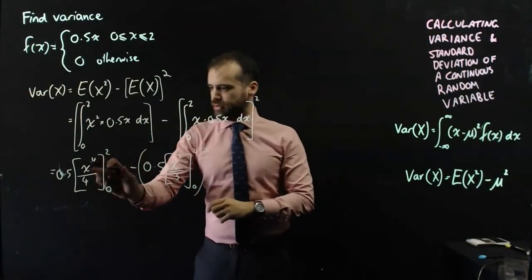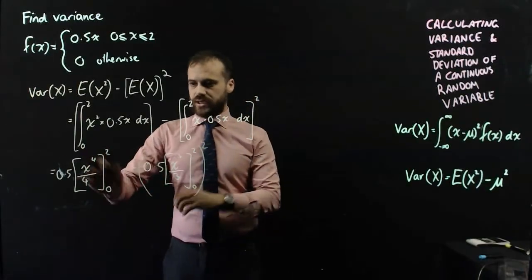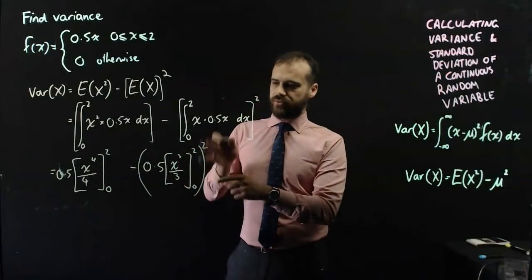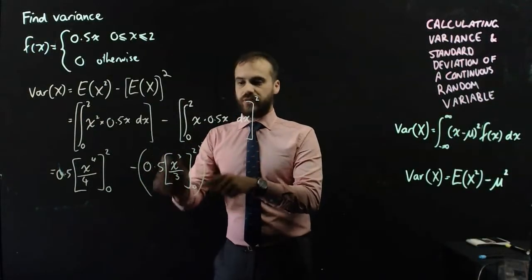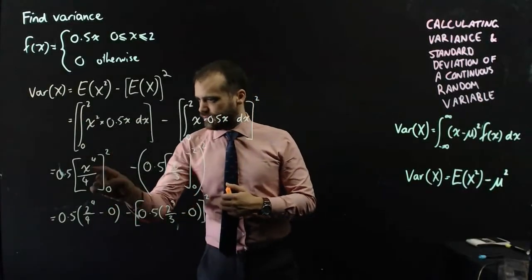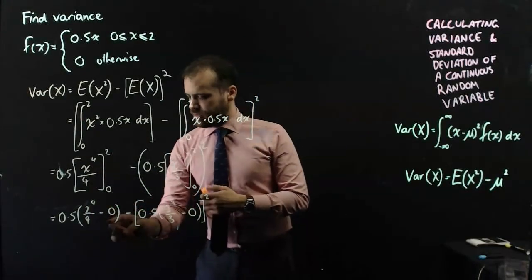So, now I'm subbing 2 in for x, subbing 0 in for x, subtracting one from the other, multiplying by 0.5. I'm subbing 2 in for x, I'm subbing 0 in for x, multiplying by 0.5, and then squaring it. So, I've subbed 2 in here for x, then the minus 0 here.